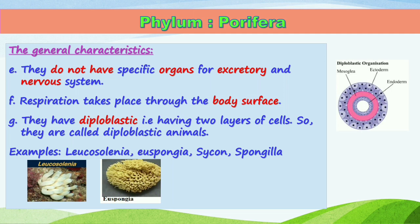Another characteristic is that they have a diploblastic body — diplo means two layers of cells. Organisms made up of two layers of skin are ectoderm and endoderm. Endoderm is the inner layer and ectoderm is the outer layer of the body. These two layers are separated by a thin layer called mesoglea, as you can see in the picture.